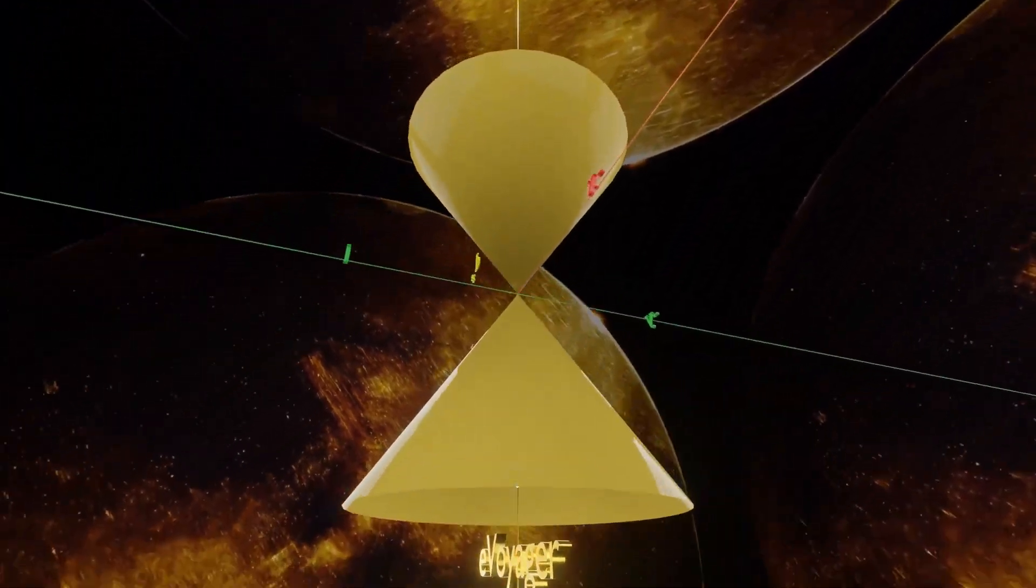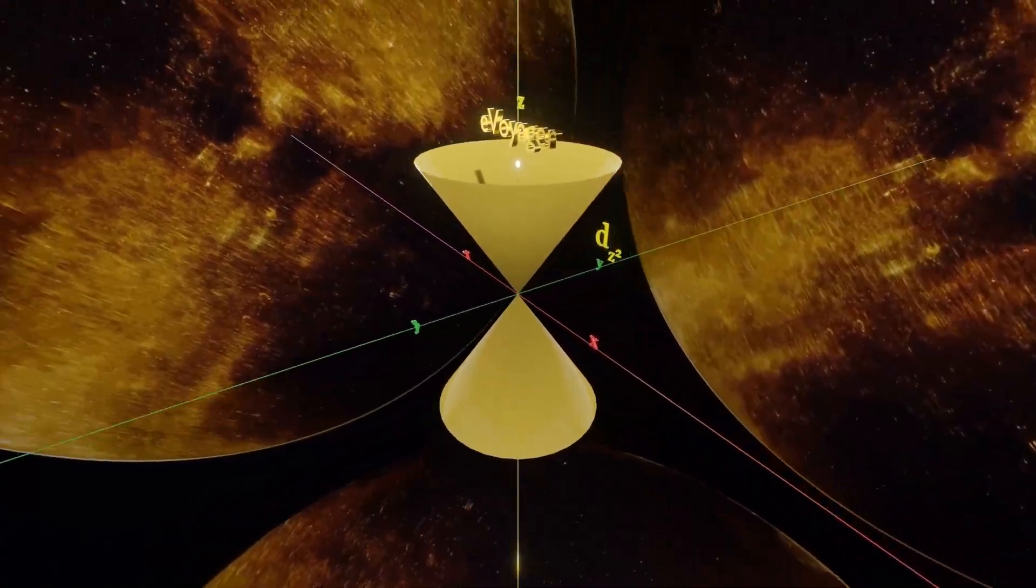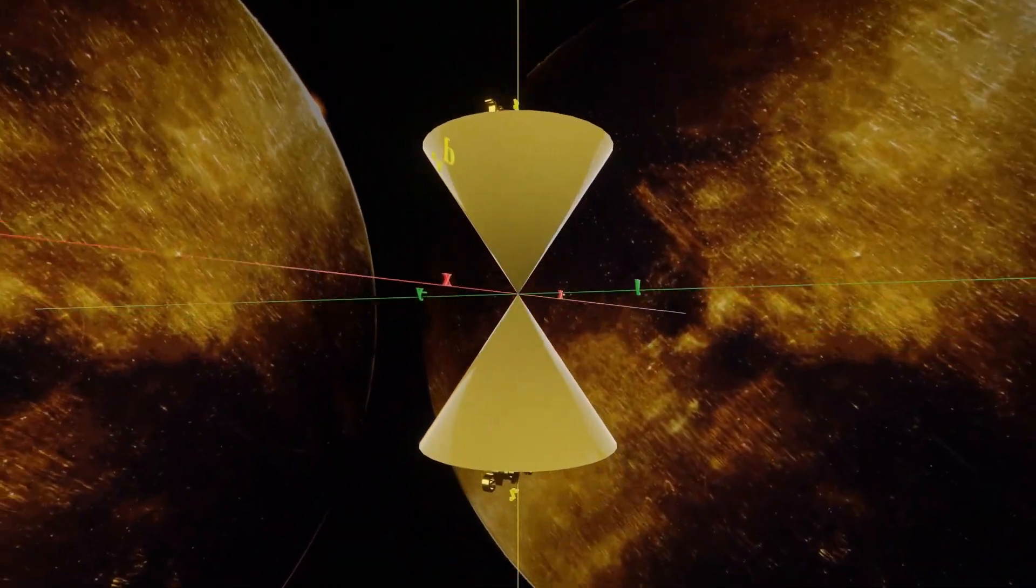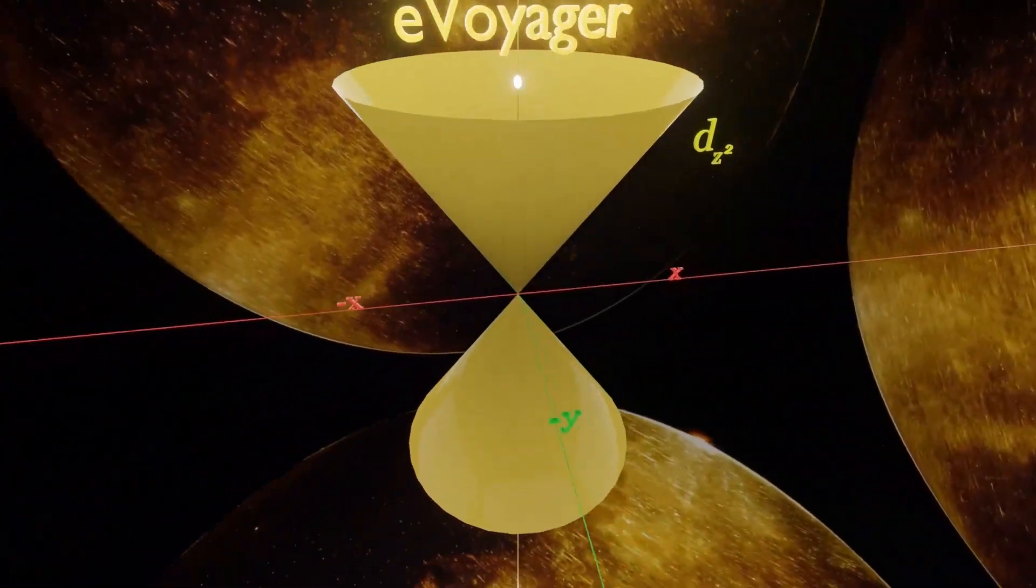So this is our nodal plane for the dz square, actually 3dz square orbital. The probability of electron being here, i.e. on the nodal plane, will be zero.